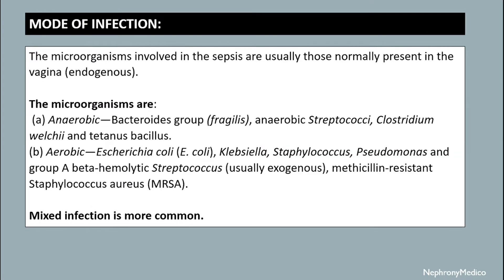The microorganisms involved in septic abortion are usually those normally present in the vagina. Anaerobic organisms include anaerobic streptococci, Clostridium welchii, and tetanus bacillus. Aerobic organisms include E. coli, Klebsiella, Staphylococcus, Pseudomonas, and others. Mixed infection is also more common.